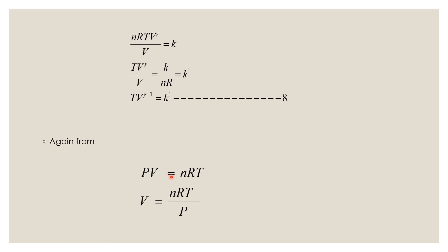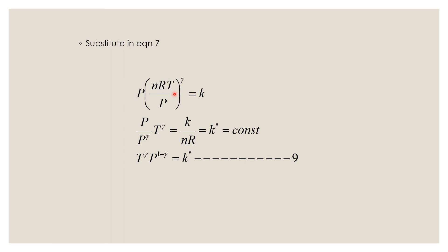Again using the ideal gas equation pV equals nRT, we get V equal to nRT over p. Substituting this V in equation 7, we get p times nRT over p, the whole raised to gamma, equals k. Taking n and R to the other side gives a new constant k double dash. Finally, we get p raised to gamma times p raised to 1 minus gamma is equal to k double dash — equation 9. This way we get the relations between p and V, V and T, and p and T. Thank you for watching this video.